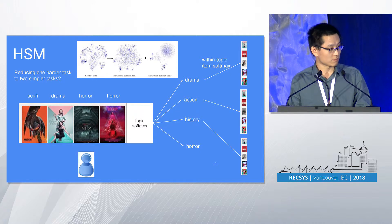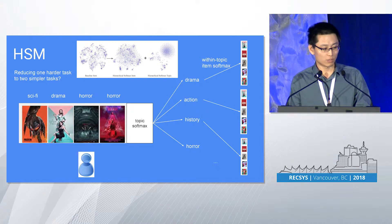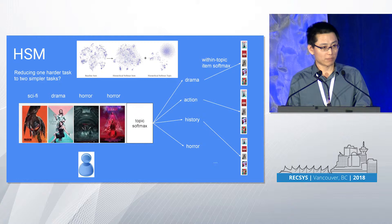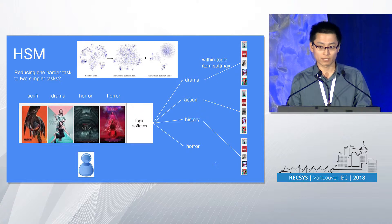You might be able to see this T-SNE visualization of the softmax embedding. On the left, the baseline flat softmax is trying to learn both item representation and grouping simultaneously. But on the right, with two softmax layers, it seems that the topic softmax has taken responsibility for learning the grouping of items, leaving the item softmax embedding to learn individual item representation.